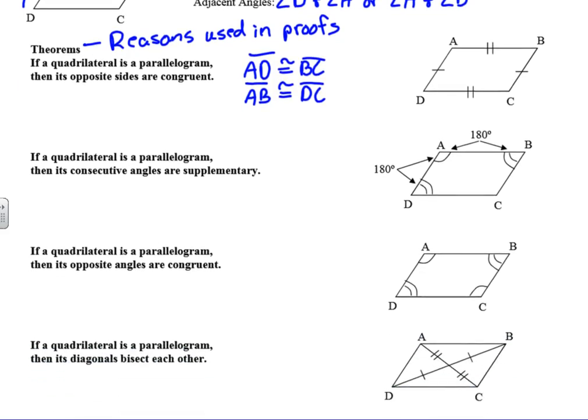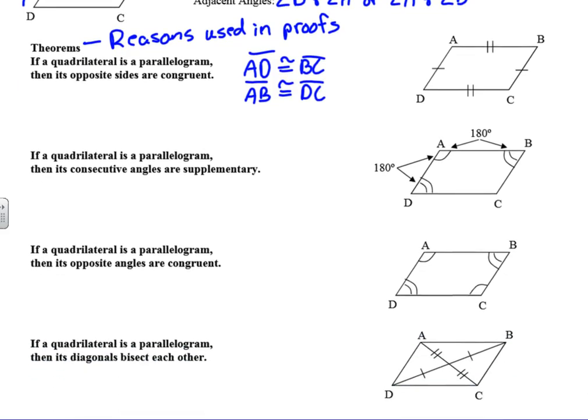If a quadrilateral is a parallelogram, then its consecutive angles are supplementary. In a parallelogram, consecutive angles are really same-side interior angles — that's another way of saying it. D and A are consecutive, and they're really same-side interior angles. A and B are also consecutive angles.